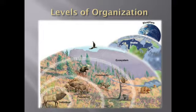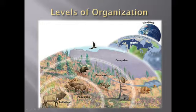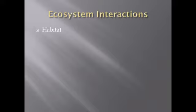The last level is the biosphere, which we've already discussed — every place on earth that can support life. Think of it like a pyramid: at the tip you have the individual, and as you move up you include more and more until you reach the biosphere at the top, which encompasses everything.